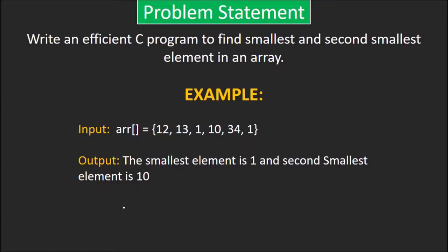Problem statement says, write an efficient C program to find the smallest and second smallest element in an array. For example, in this array, the smallest element is 1 and the second smallest element is 10. Note that even though the array has two 1s, that doesn't mean that 1 will be both smallest and second smallest.